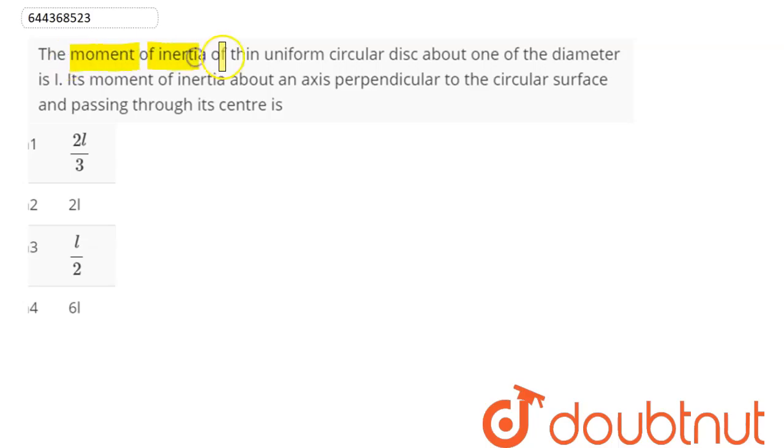Question is, moment of inertia of a thin uniform circular disc about one of the diameter is I. Its moment of inertia about an axis perpendicular to the circular surface and passing through its center is.